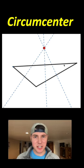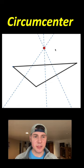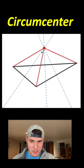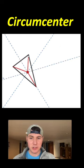The special property that the circumcenter has is that it's equidistant from the vertices of the triangle. So each of these red distances are the same, no matter how we move this triangle around.